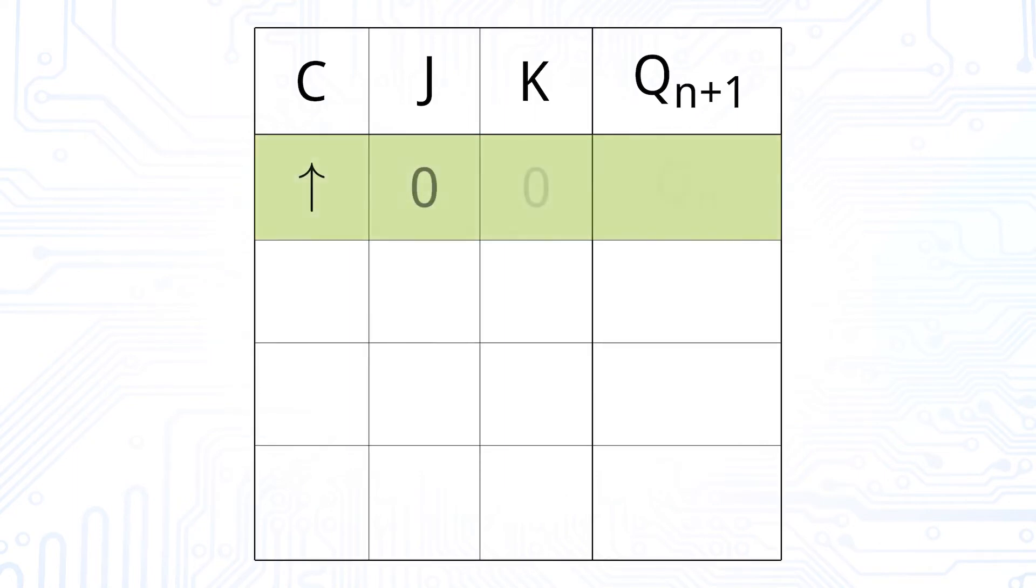If J and K are low, the output should remain the same. If K is set, the output should be reset. If J is set, the output should be set. And if K and J are set, the output should be toggled.